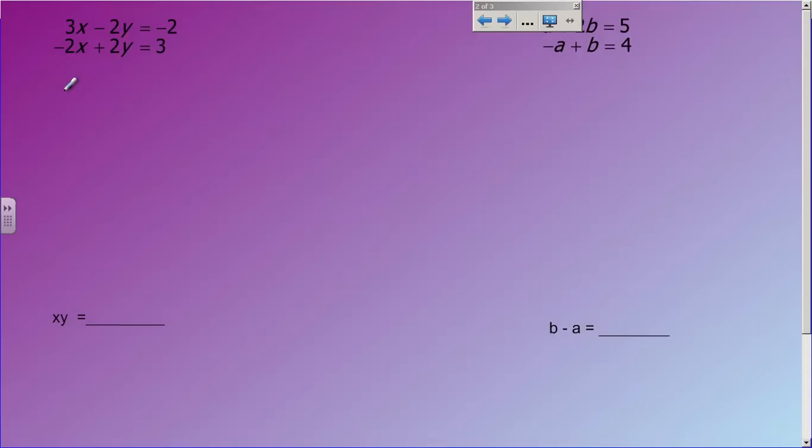If you look at your x's, you have 3x and negative 2x. They do not have the same coefficient, which means they don't have the same number in front of the variable. So their coefficients are not the same. So x's are not going to eliminate, but if you look at the y's, the y's both have a 2, they both have a coefficient of 2, and they happen to be opposites. One is negative, one is positive.